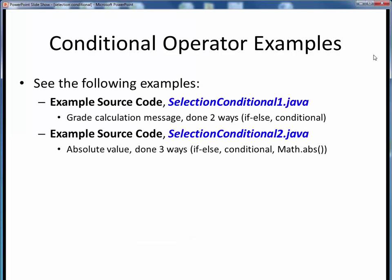To see the conditional operator at work, I'm going to refer you to the following two source code examples and their associated code walkthroughs. Please open these files in JGRASP and follow along with the walkthrough videos. SelectionConditional1.java demonstrates a grade calculation message using both if-else and a conditional operator. SelectionConditional2.java demonstrates computing an absolute value in three different ways: using if-else, a conditional operator, and as a preview of coming attractions, an available math method.